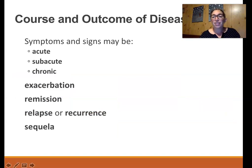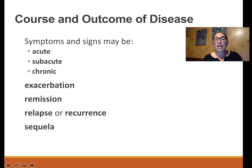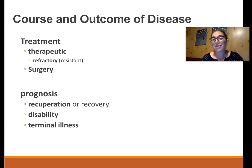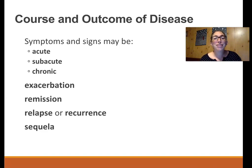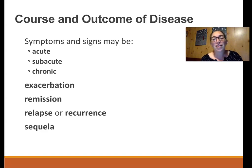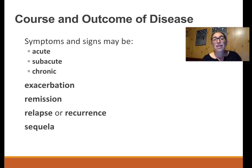If you are diagnosed with a disease, your first question is probably going to be whether you'll be okay. There are different potential outcomes of disease. Signs and symptoms may be really severe, coming on quickly and strongly — we call that acute disease. Some diseases are more mild and long-term — those are chronic diseases. You might come in because you've had a headache for three months, or joint pain that's been bothering you for months — that's a chronic condition.